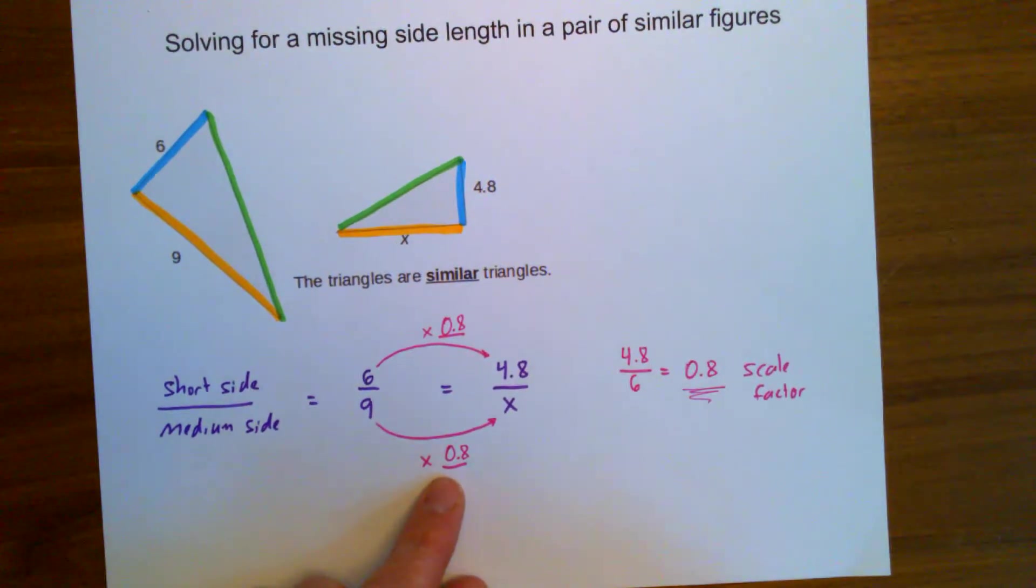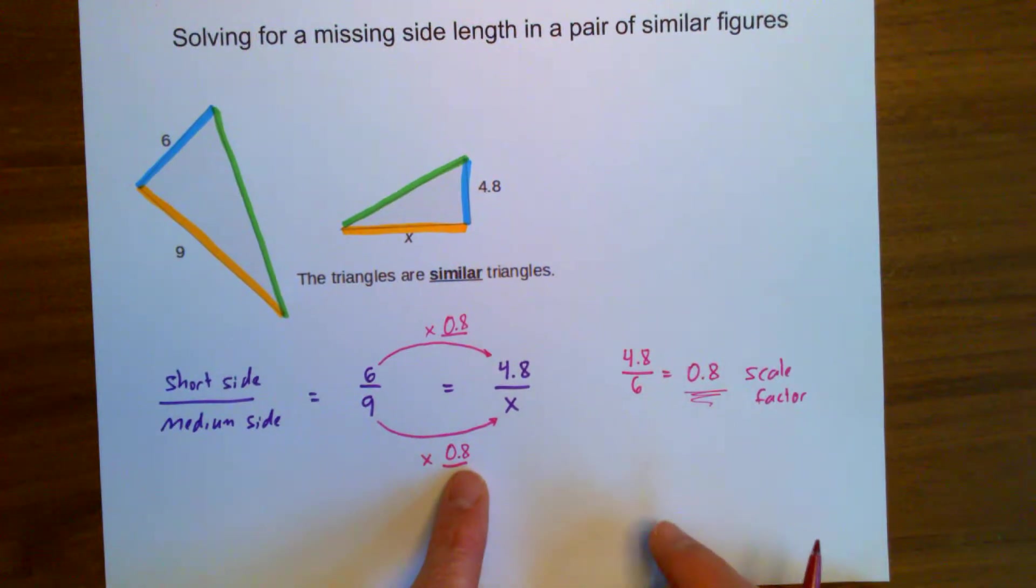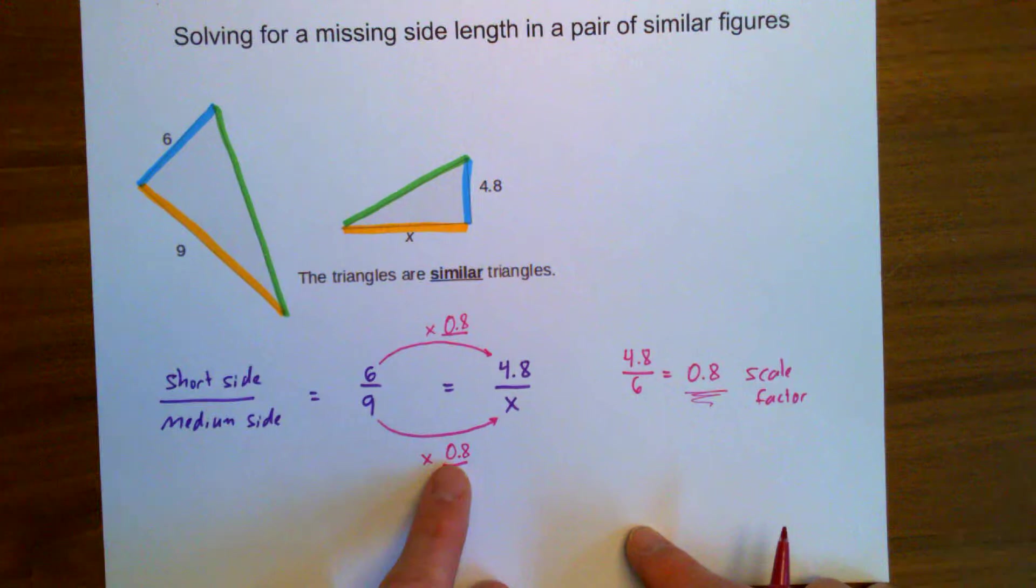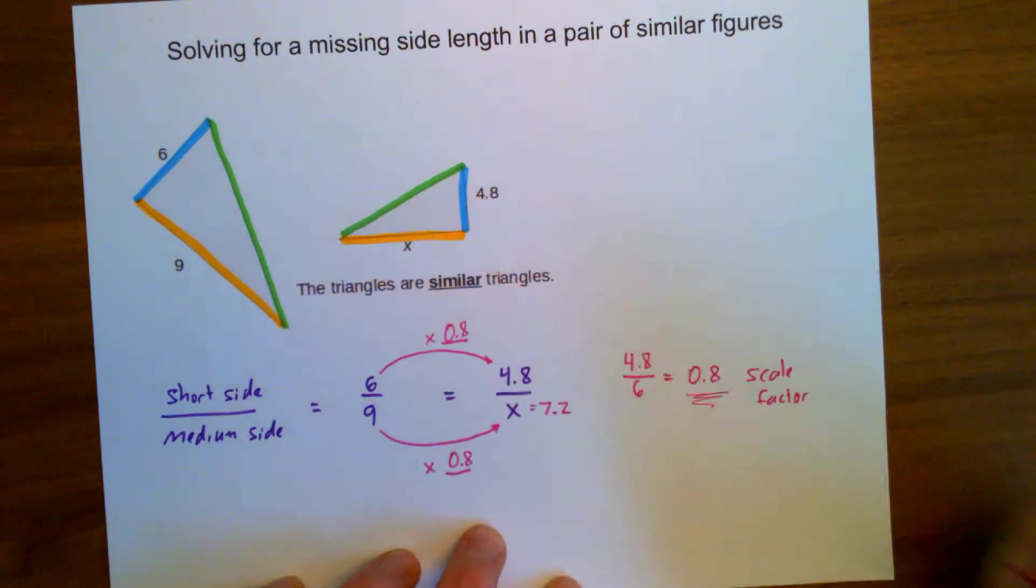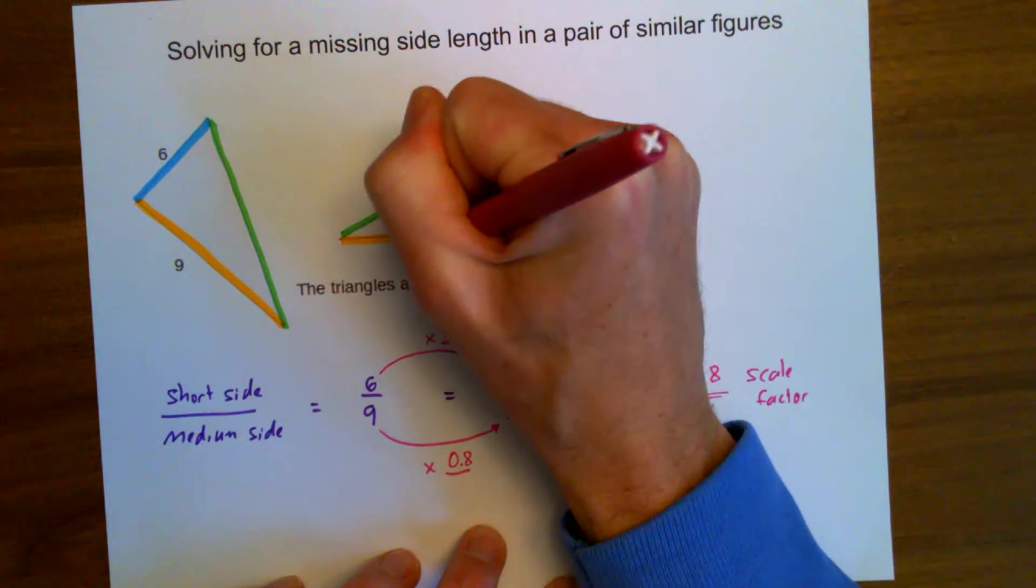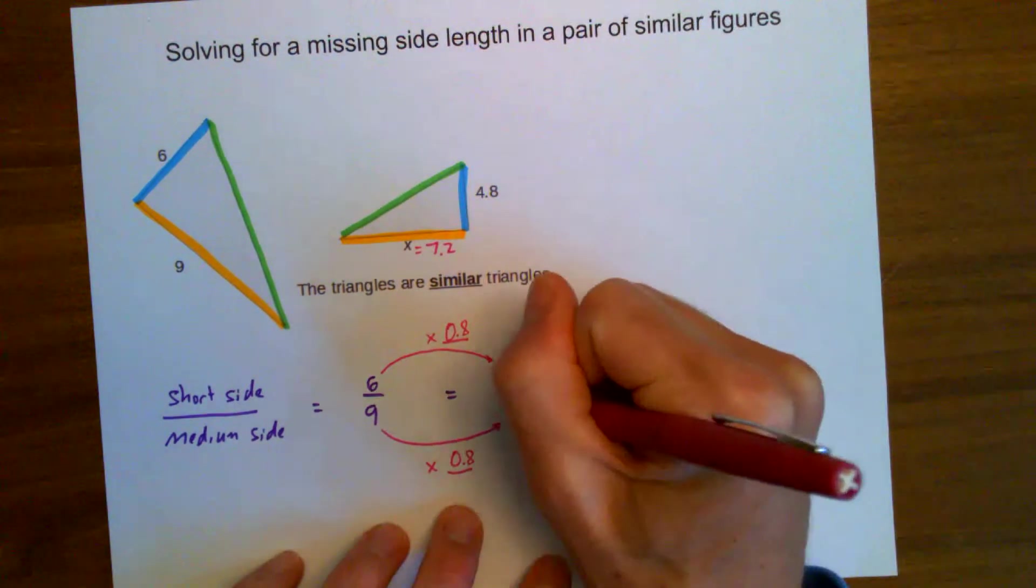9 times 0.8 should tell me the new side length. And can we do this without a calculator? You can use a calculator if you want. But I know that 9 times 8 is 72. So 9 times 0.8 should be 7.2. So this new side length over here has shrunk from 9 down to 7.2. 7.2 is my answer.